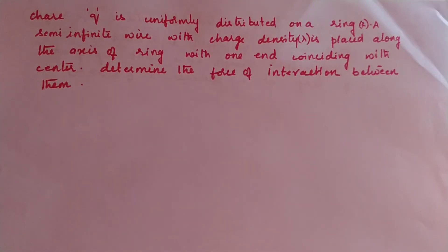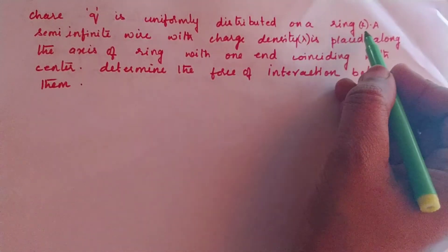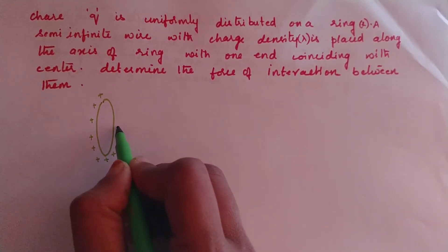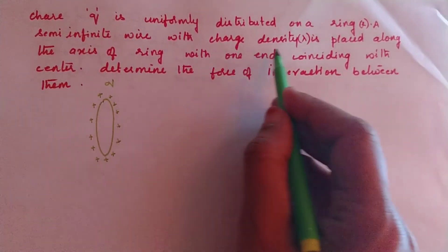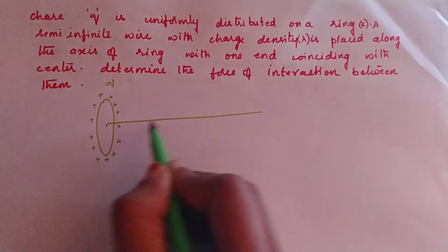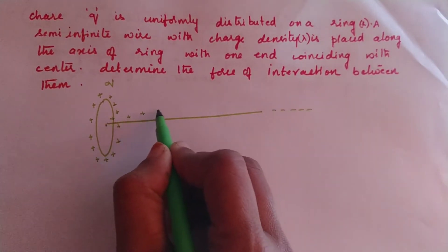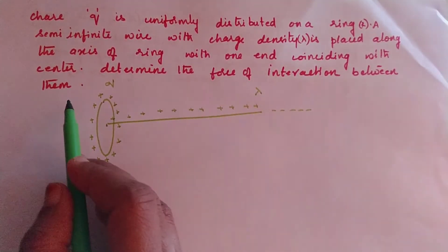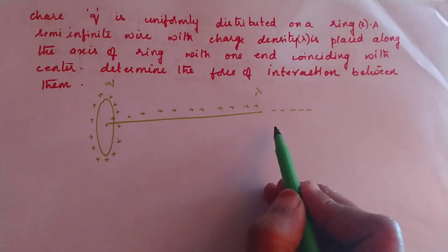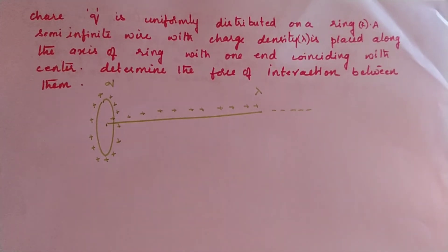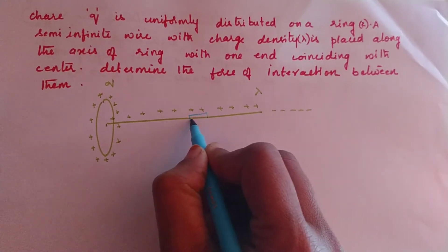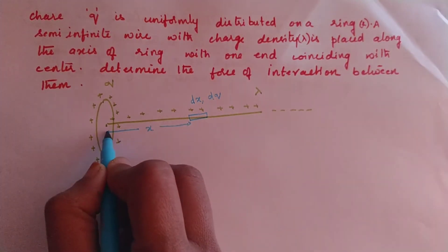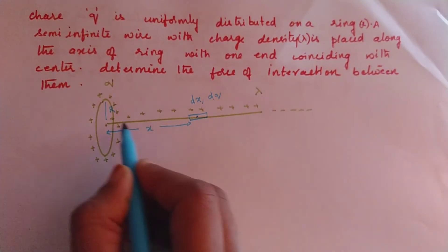In the next question, a charge Q is uniformly distributed on a ring of radius R. Along the axis there is a semi-infinite wire with linear charge density lambda, with one end at the ring and the other end extending to infinity. We need to find the force of interaction between them. We take a small element of length dx at distance x on the wire, with charge dq = lambda dx.